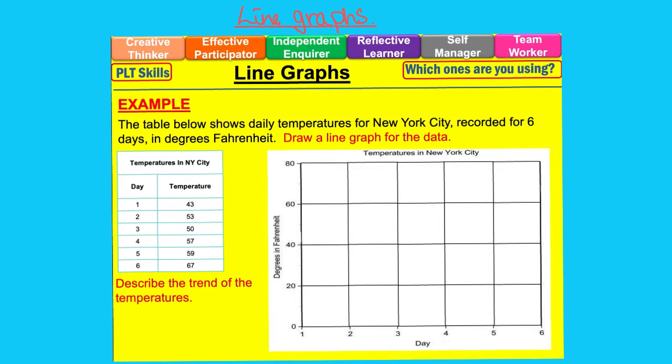If you look at the table to the left, it shows days one through six and the daily temperature. Day one the temperature was 43, day four the temperature was 57, and day six the temperature was 67. Plot these points on the graph to the right.